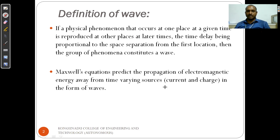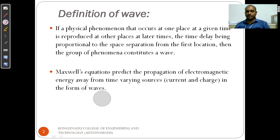The Maxwell equations predict the propagation of electromagnetic energy away from time-varying sources in the form of waves. Electromagnetic energy is transferred from one place to another through electromagnetic waves.